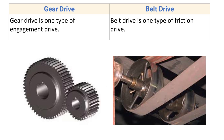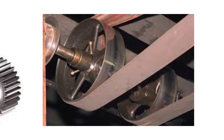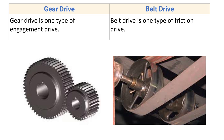Belt drive is one type of friction drive. Here you can see an example of belt drive. The motion is transmitted from one pulley to another by means of a flexible element, which is the belt. There is friction between the inner surface of the belt and the outer surface of the pulley, and due to this the power is transmitted. If the load increases beyond the friction force, there will be slip, and hence belt drive is known as a friction drive.